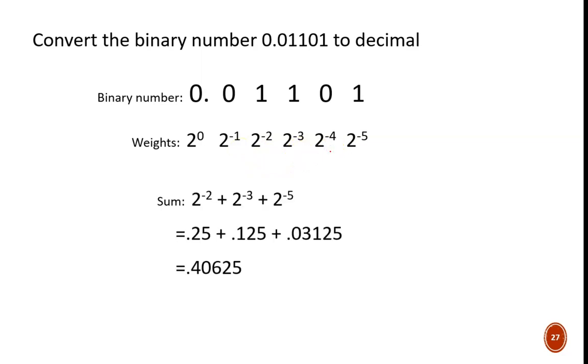Now I multiply each bit value by its weight. Any value of 0 simply drops off. Finally, I add the remaining values together to produce the final result. Here we see that binary 0.01101 equals decimal .40625.